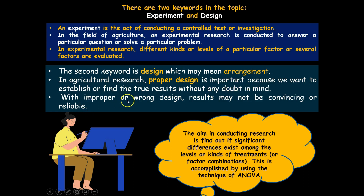With an improper or wrong experimental design, the results may not be convincing or reliable. The aim in conducting agricultural or forestry research is to find if significant differences exist among the levels or kinds of treatments, objects of comparison, or different factor combinations. This is accomplished by the use of analysis of variance, which has already been discussed in previous videos.